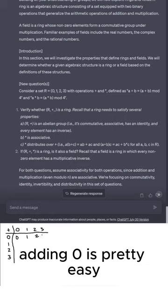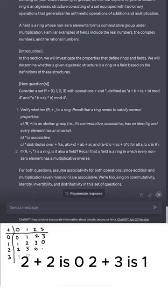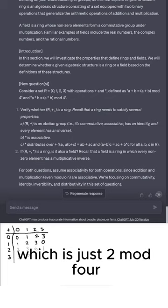Adding zero is pretty easy. Adding one is pretty easy. One plus three is 0 mod 4. Two plus two is 0. Two plus three is 1. And three plus three is 6, which is just 2 mod 4.